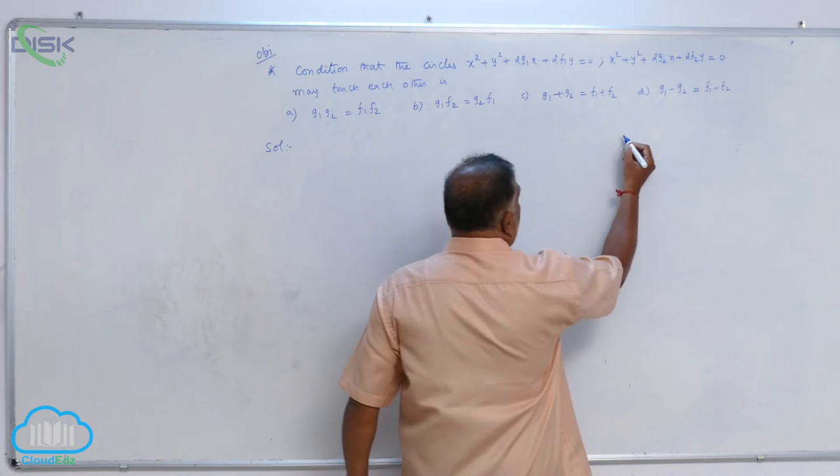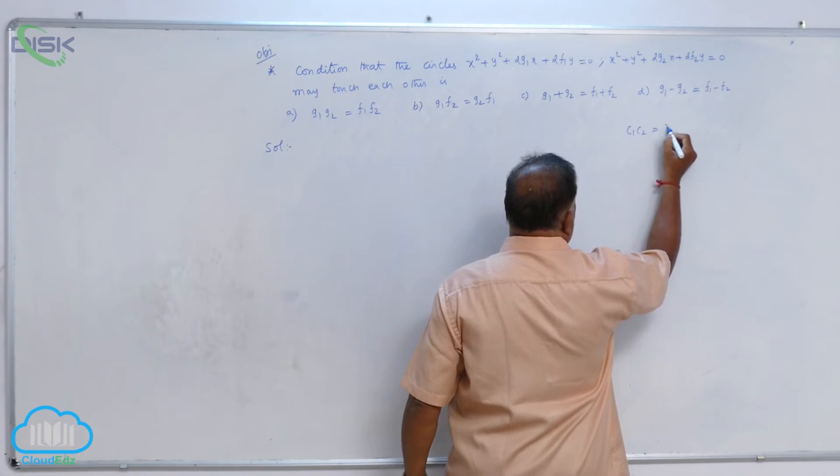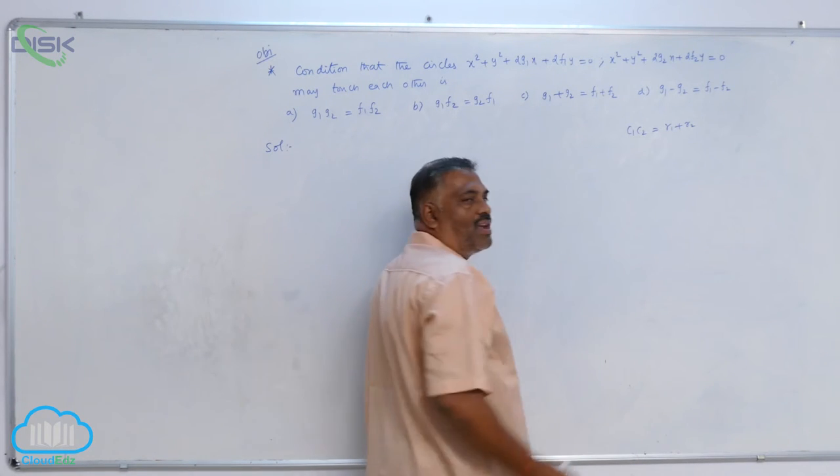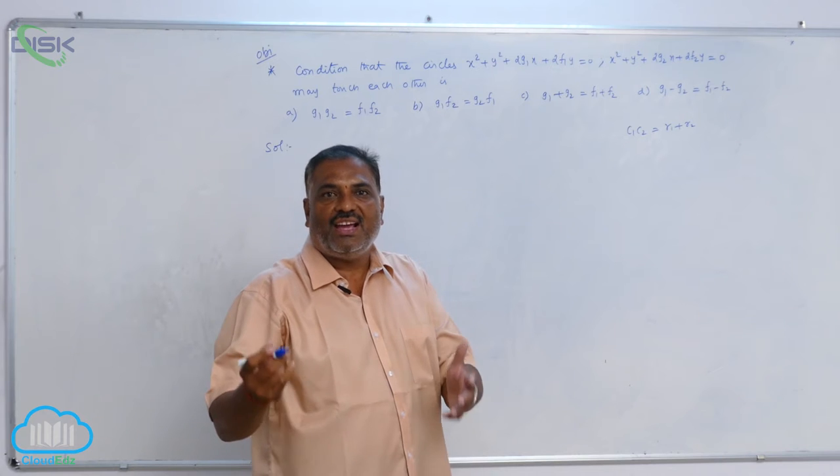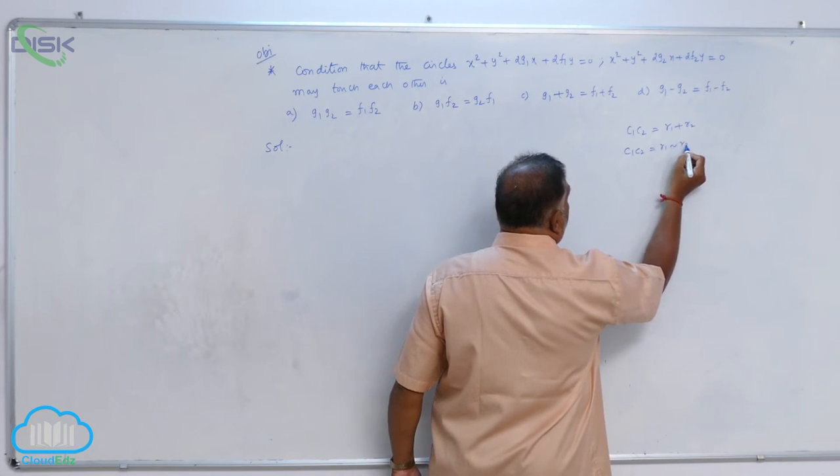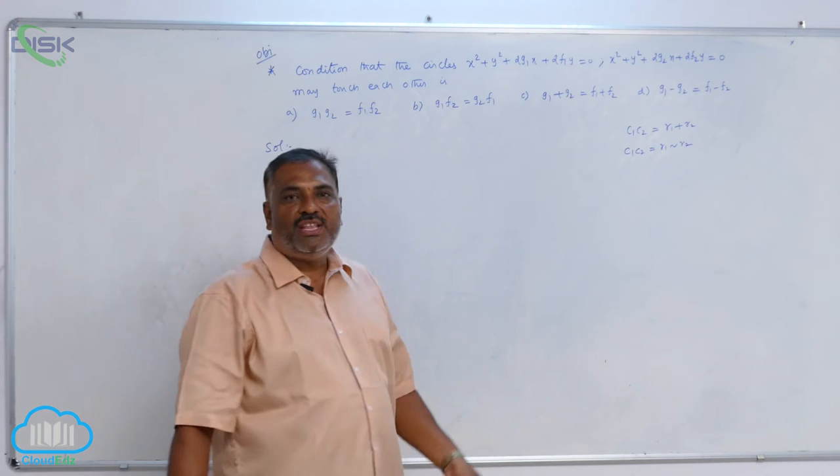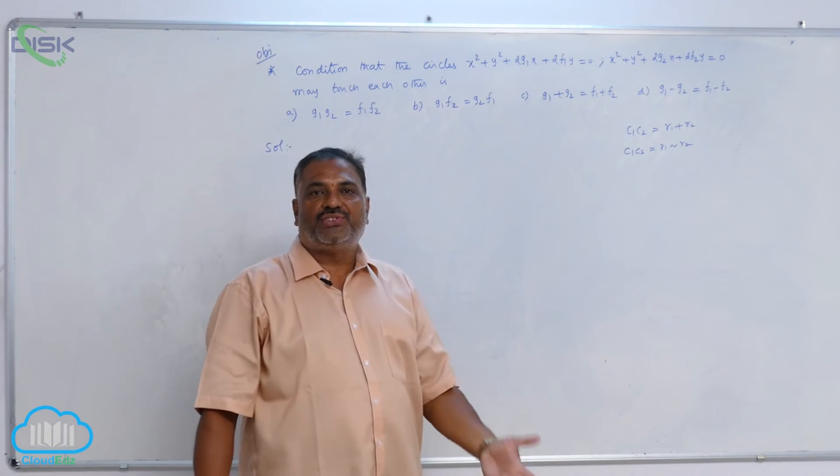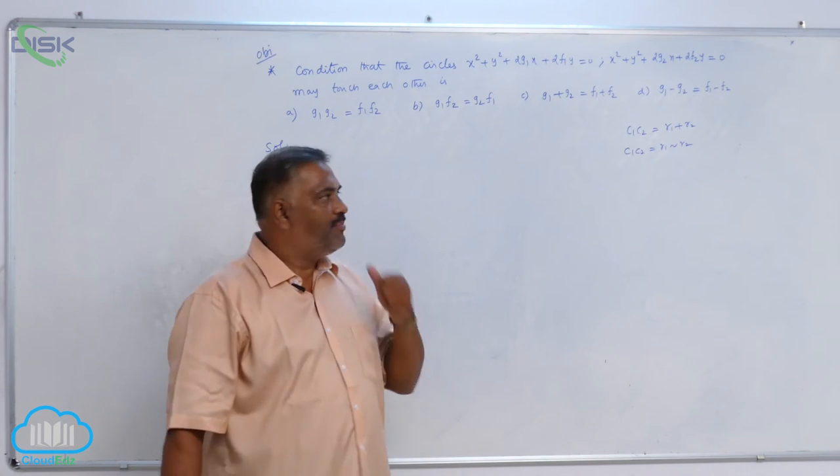Generally, we can apply the formula c1c2 equal to r1 plus r2 for the two circles touching each other externally. Whereas, c1c2 is equal to r1 minus r2 is the condition for the two circles to touch each other internally.